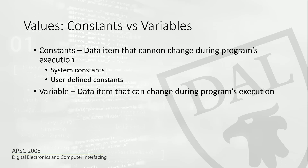There is also something called a variable. A variable can change during program execution — it is the container we use to store different data. For example, think of a variable like a glass. A glass can hold Coke, water, or milk — it doesn't matter what it is. We know it is a glass and it can contain a certain volume of liquid. That is an example of a variable. A variable is something that can change during the program's execution, and we use it to extract or feed data to the system. That is value.